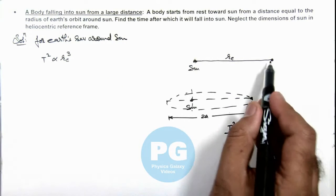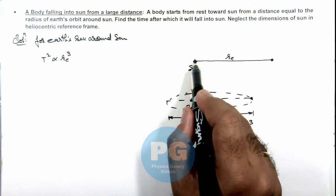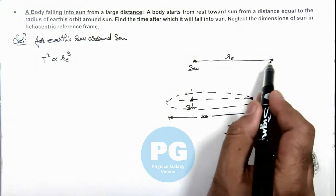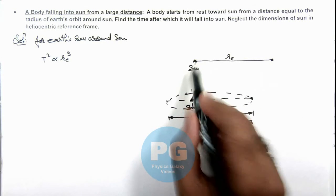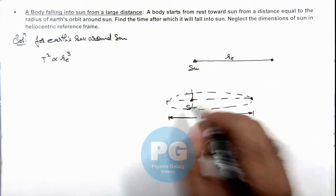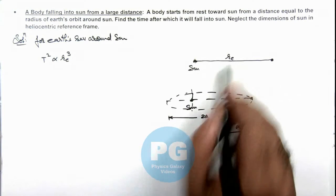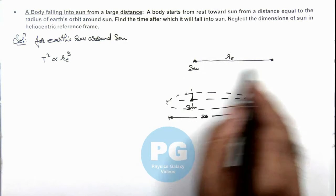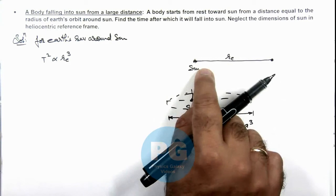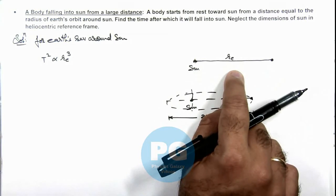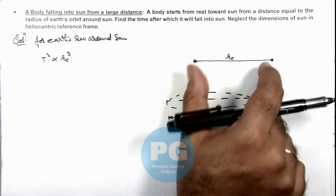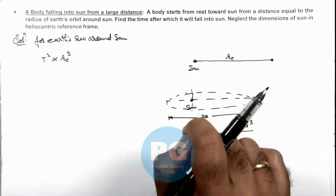But when this body will be approaching sun in a straight line, we can assume this is an approximate elliptical path with minor axis equal to zero. And in that case the major axis will be re. So this can be considered as an approximated ellipse which is like a straight line, with major axis equal to re and minor axis equal to zero.